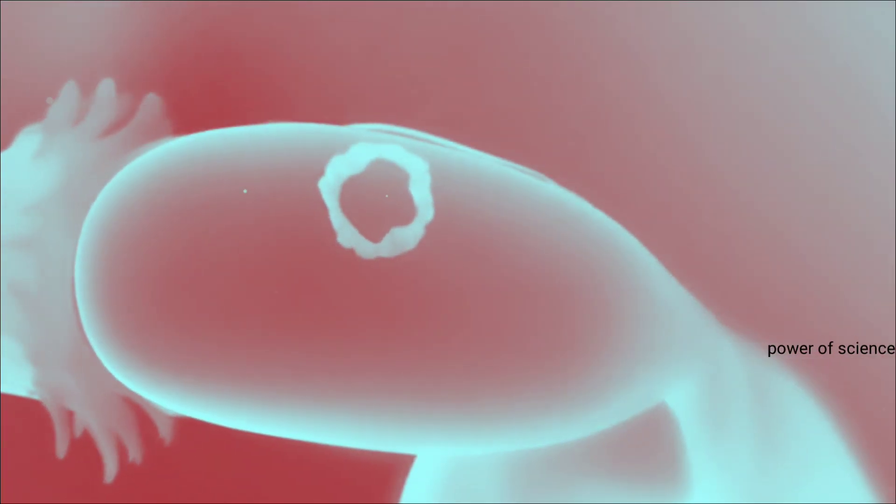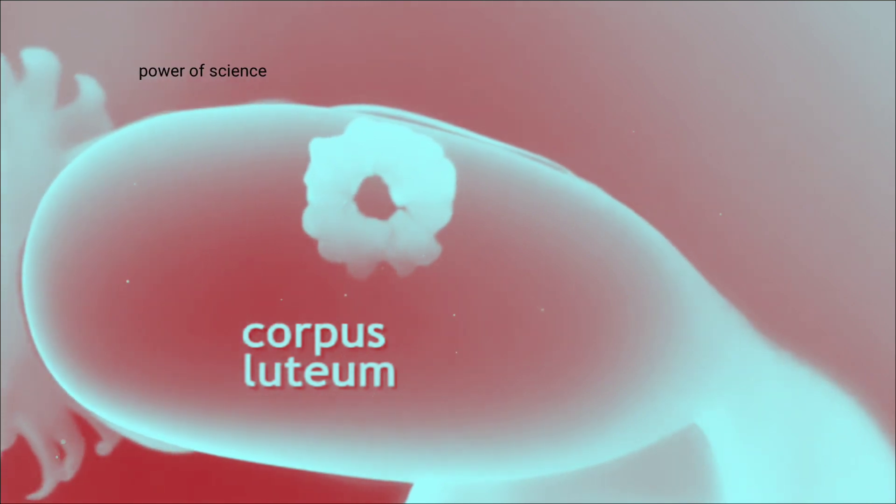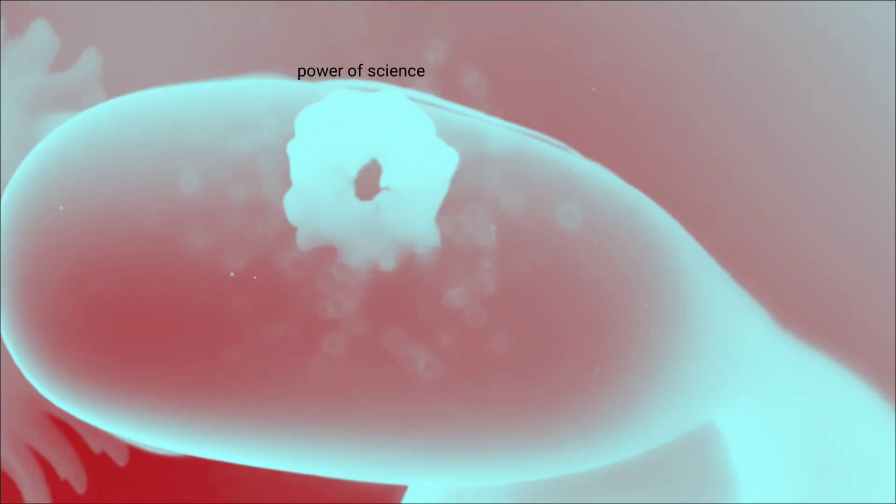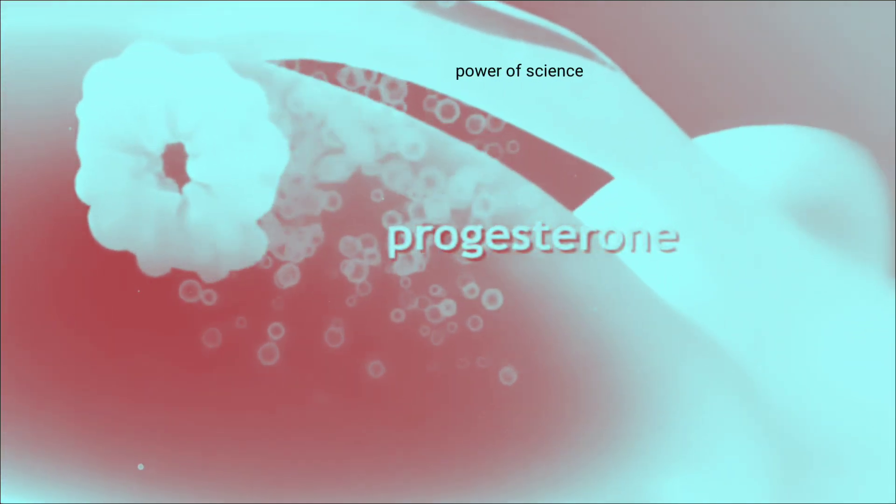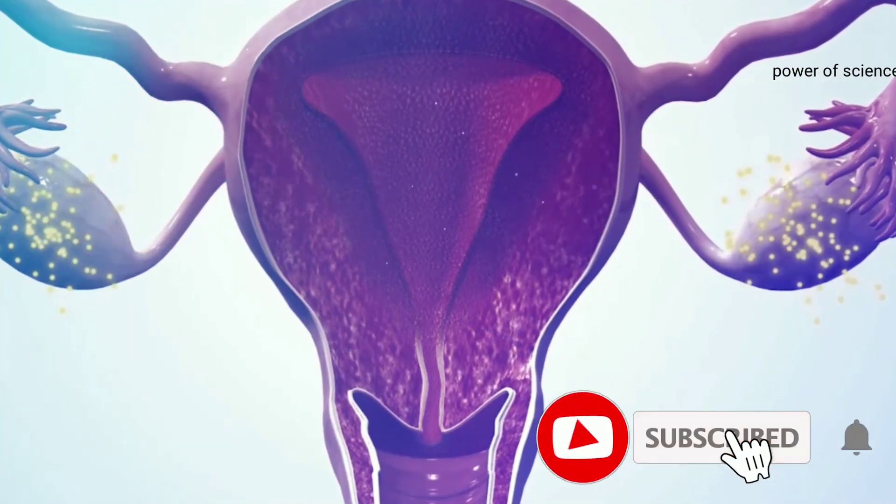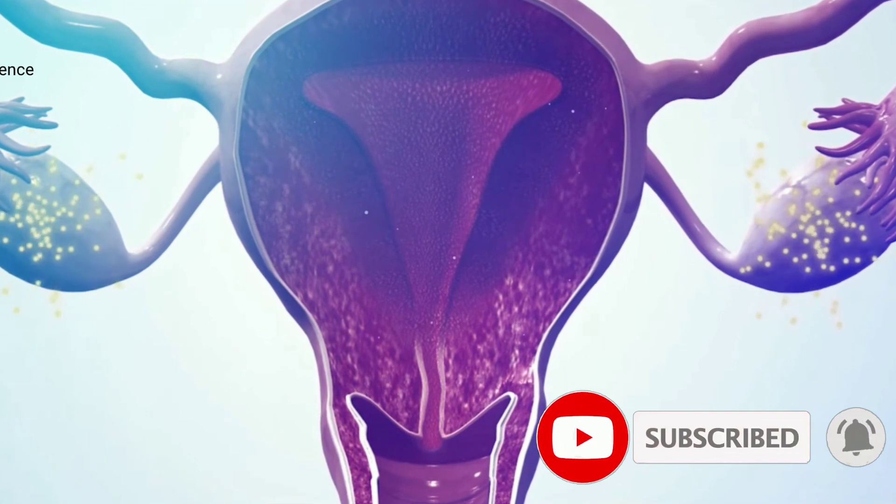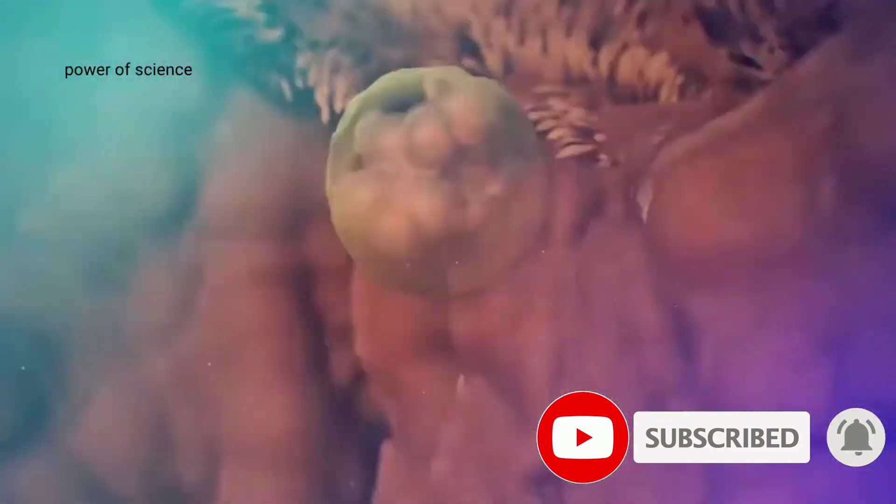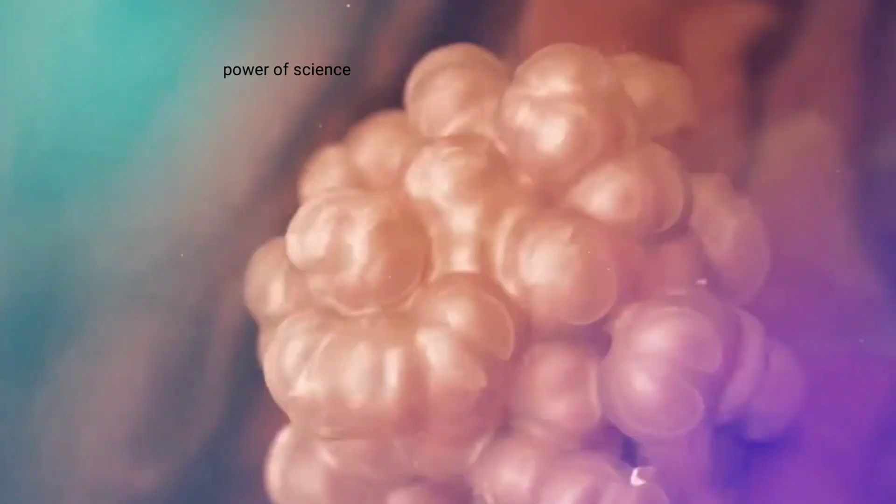And at the same time, the cells of the broken follicles in the ovaries are converted into mass cells called corpus luteum. Corpus luteum cells continue to secrete progesterone hormones. This causes the cells of the inner lining of the uterus, the endometrium, to grow, so that once the egg is fertilized, it can get proper nutrition.